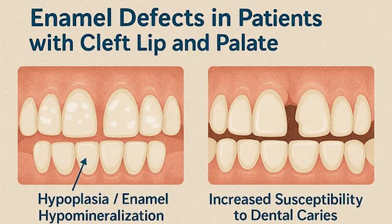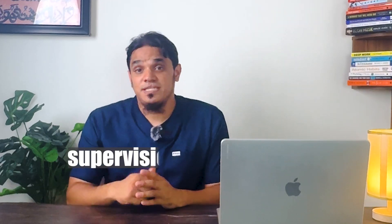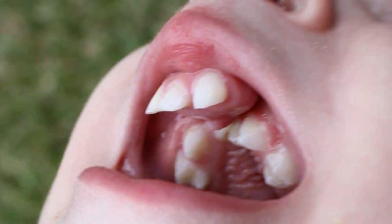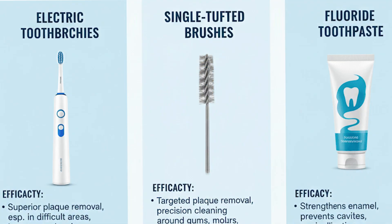Because of enamel defects, teeth near the cleft have unusual shapes and weaker enamel, making them susceptible to decay the moment they erupt. What are the practical strategies? Supervision is key. Parents, you'll likely need to monitor your child's brushing and flossing more than you do for other children—not because of lack of skill, but because of the unique anatomy. Second, the right tools: electric toothbrushes, single-tufted brushes to clean around orthodontic appliances, and fluoride toothpaste are non-negotiable.